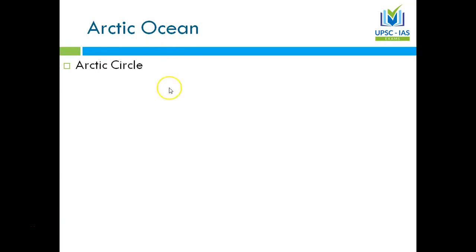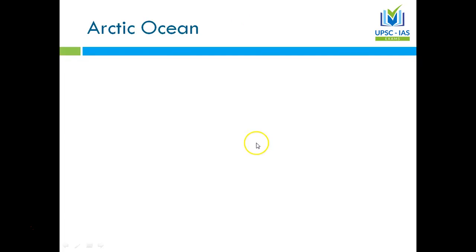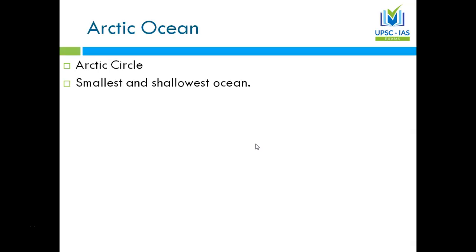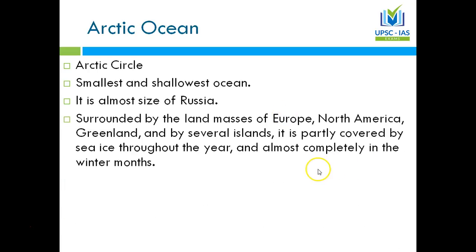Let's go through some details of the Arctic Ocean. We have already located the Arctic Circle around it. It is one of the smallest and shallowest oceans in the world — almost the size of Russia. It is surrounded by the landmasses of Europe, North America, Greenland, and several islands. It is partly covered by ice throughout the year and almost completely covered in the winter months.